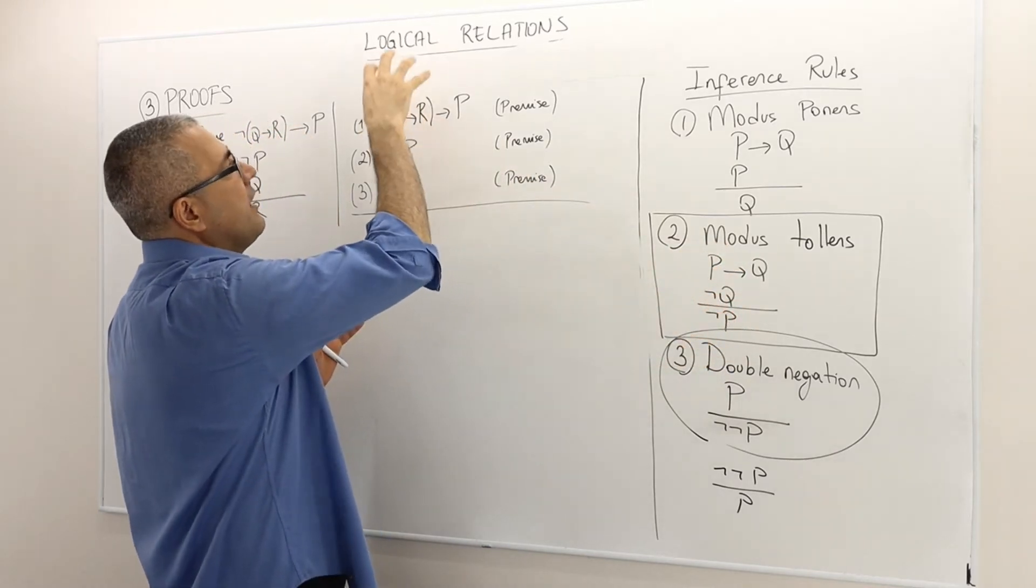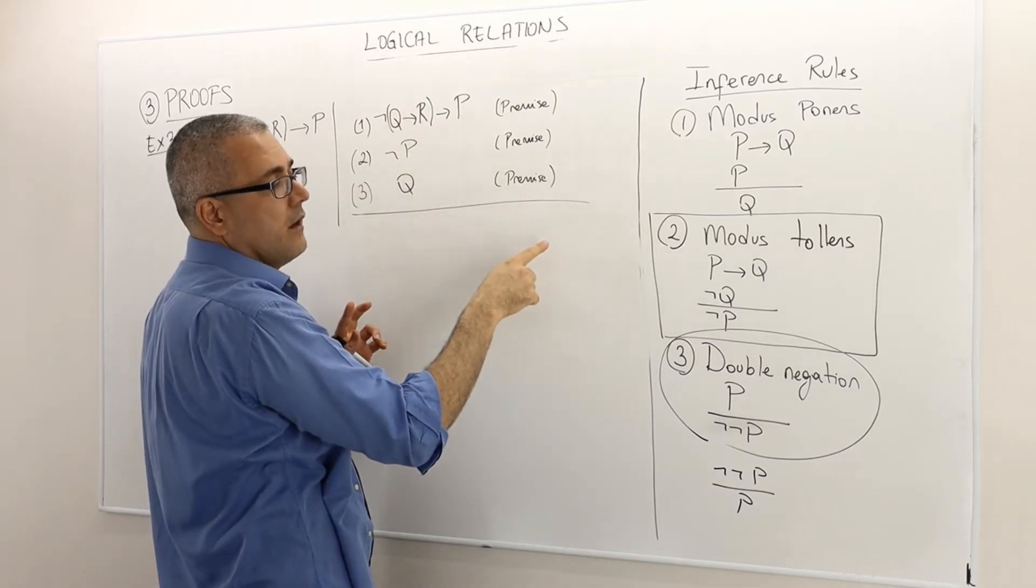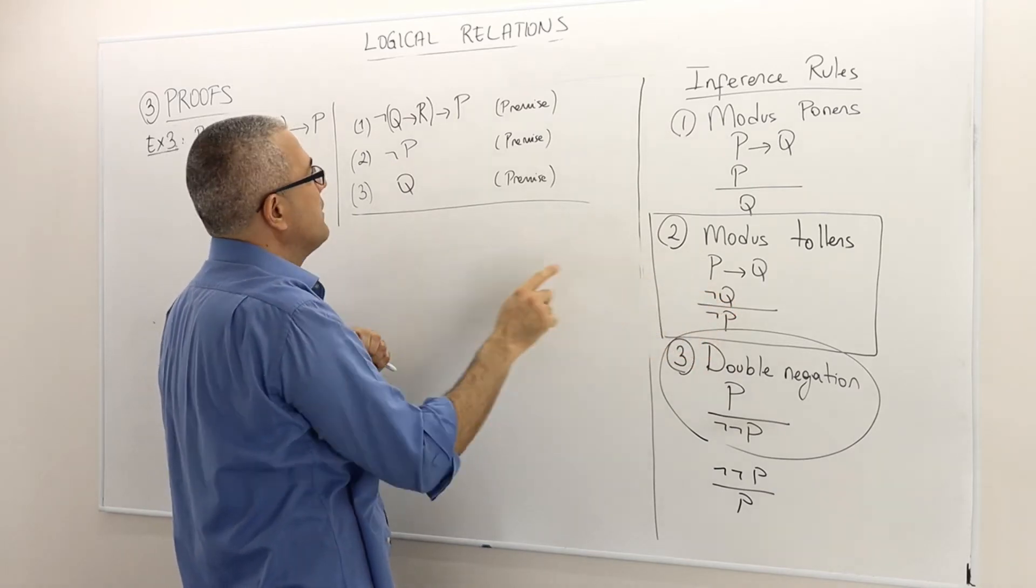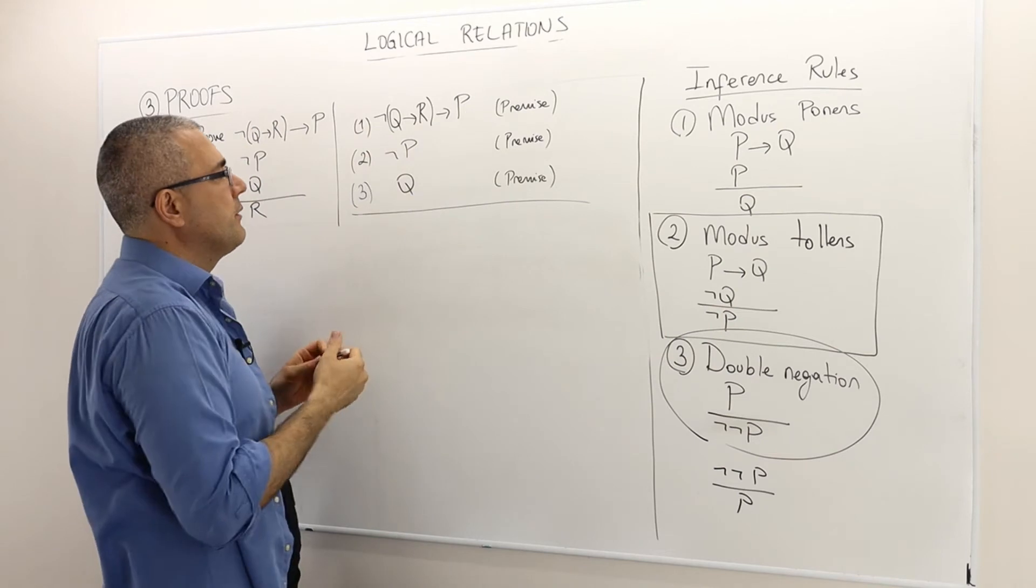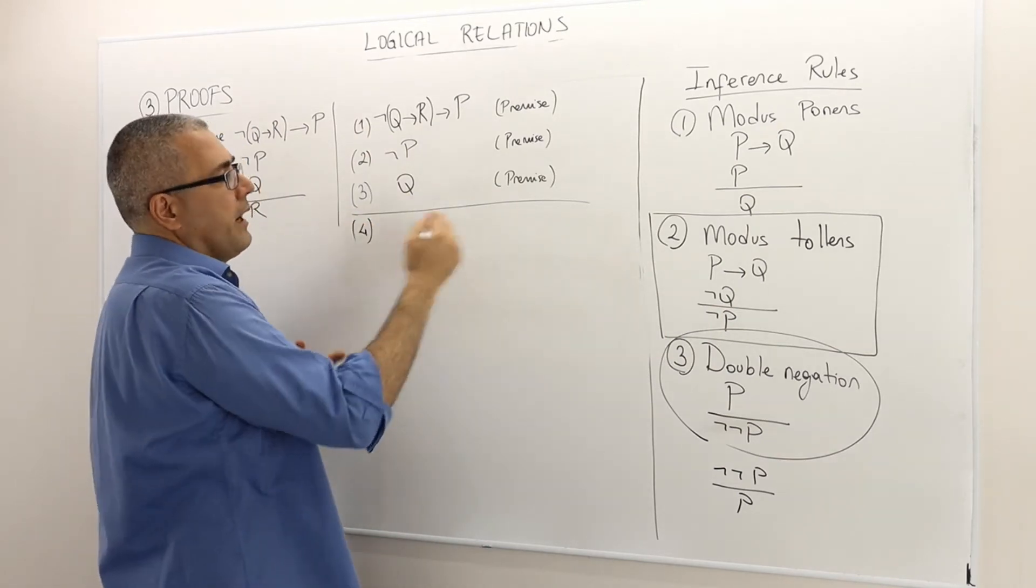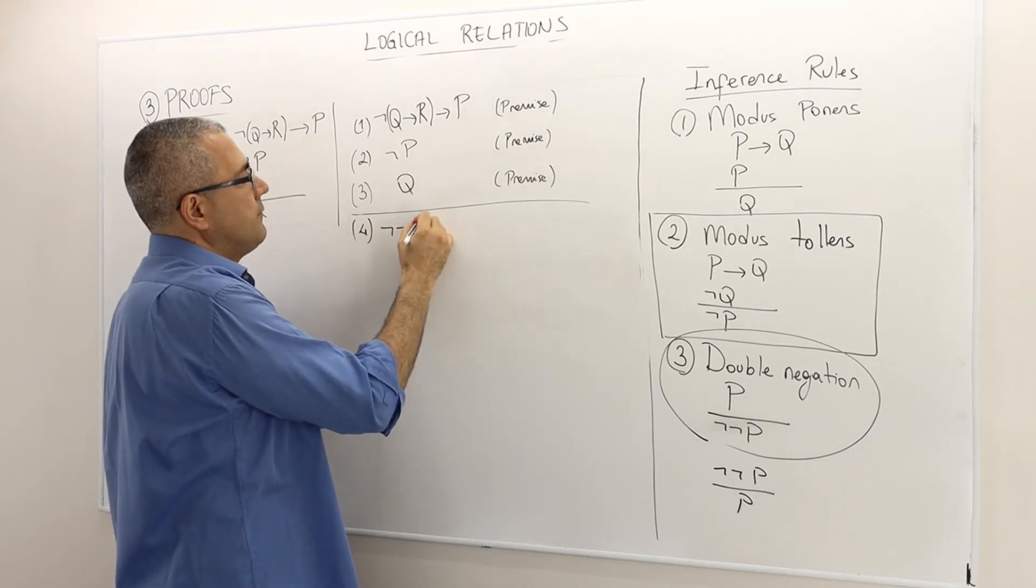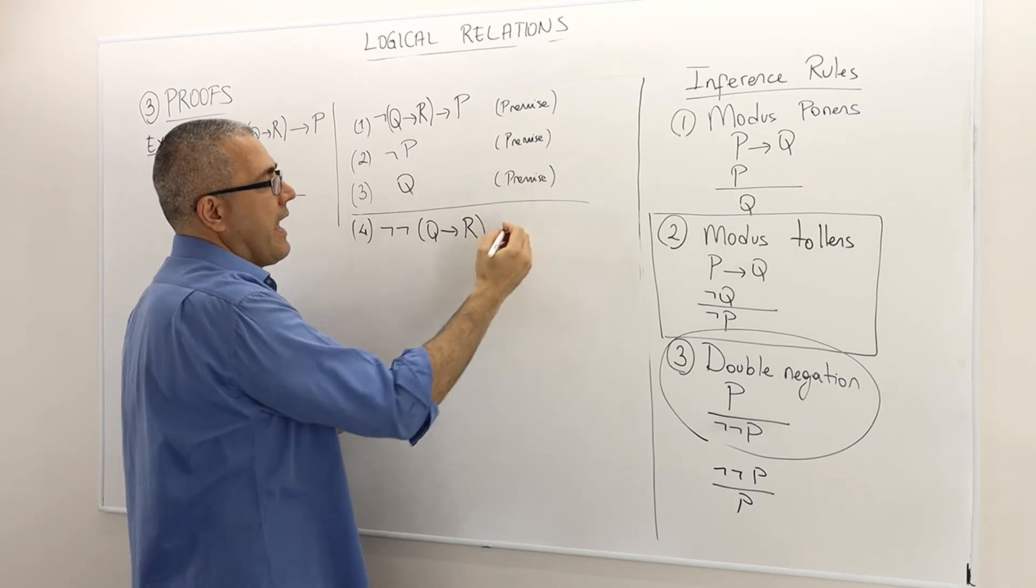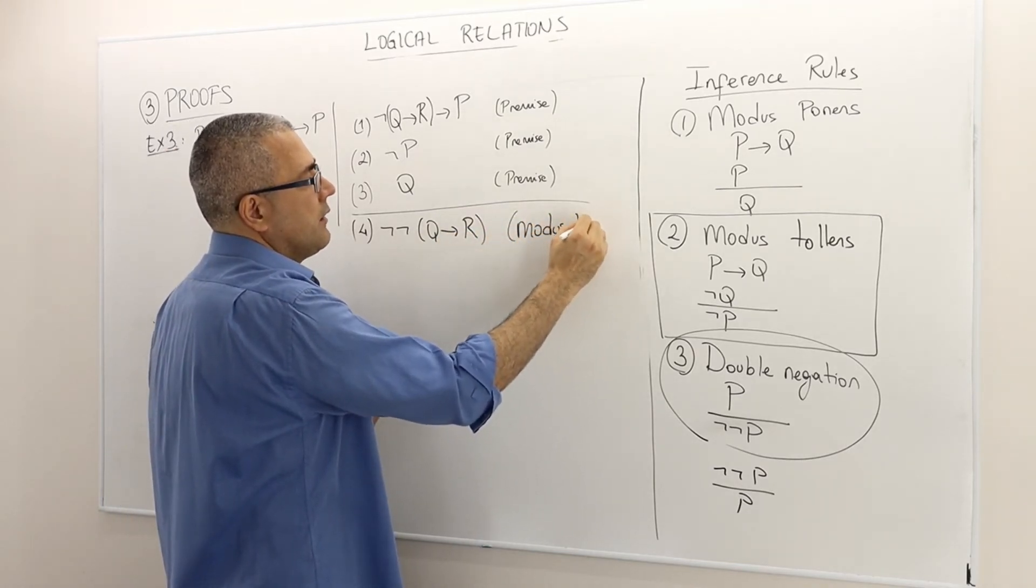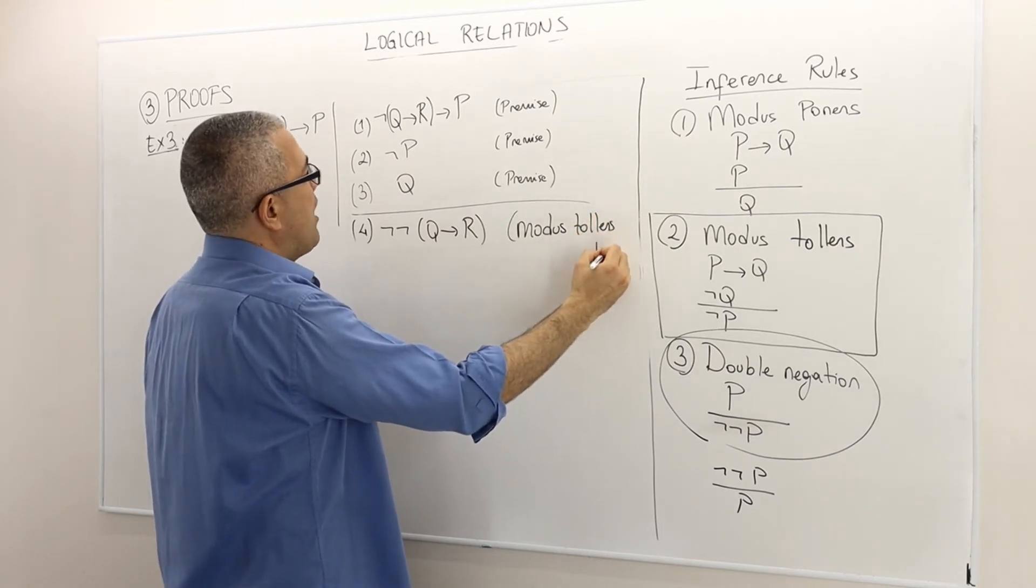So I have something implies P and then not P. Like P is equal to Q in this environment. So therefore I must have not not Q implies R. So the fourth conclusion by using the modus tollens is not not Q implies R. And again, this is thanks to modus tollens of argument 1 and 2.